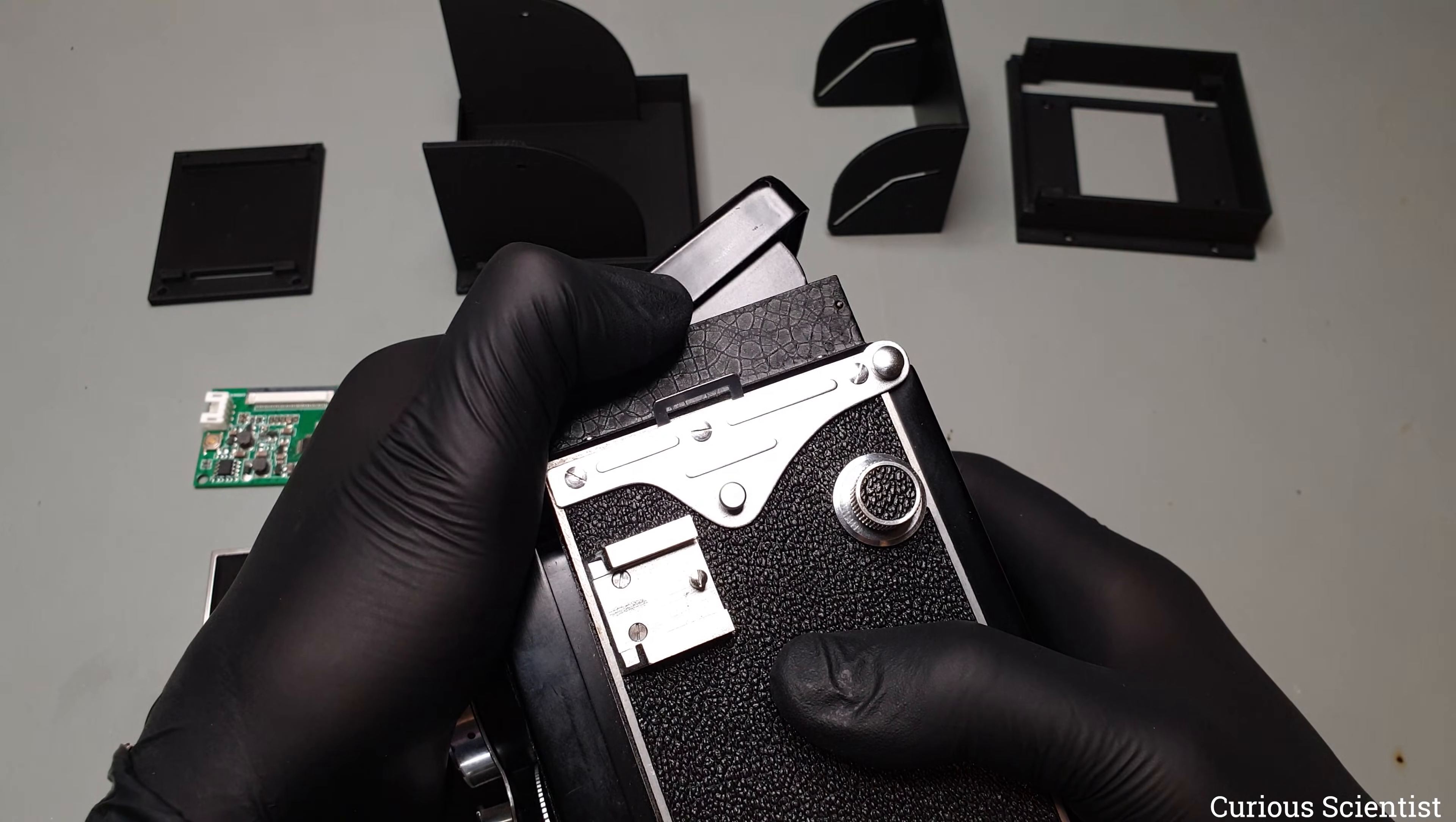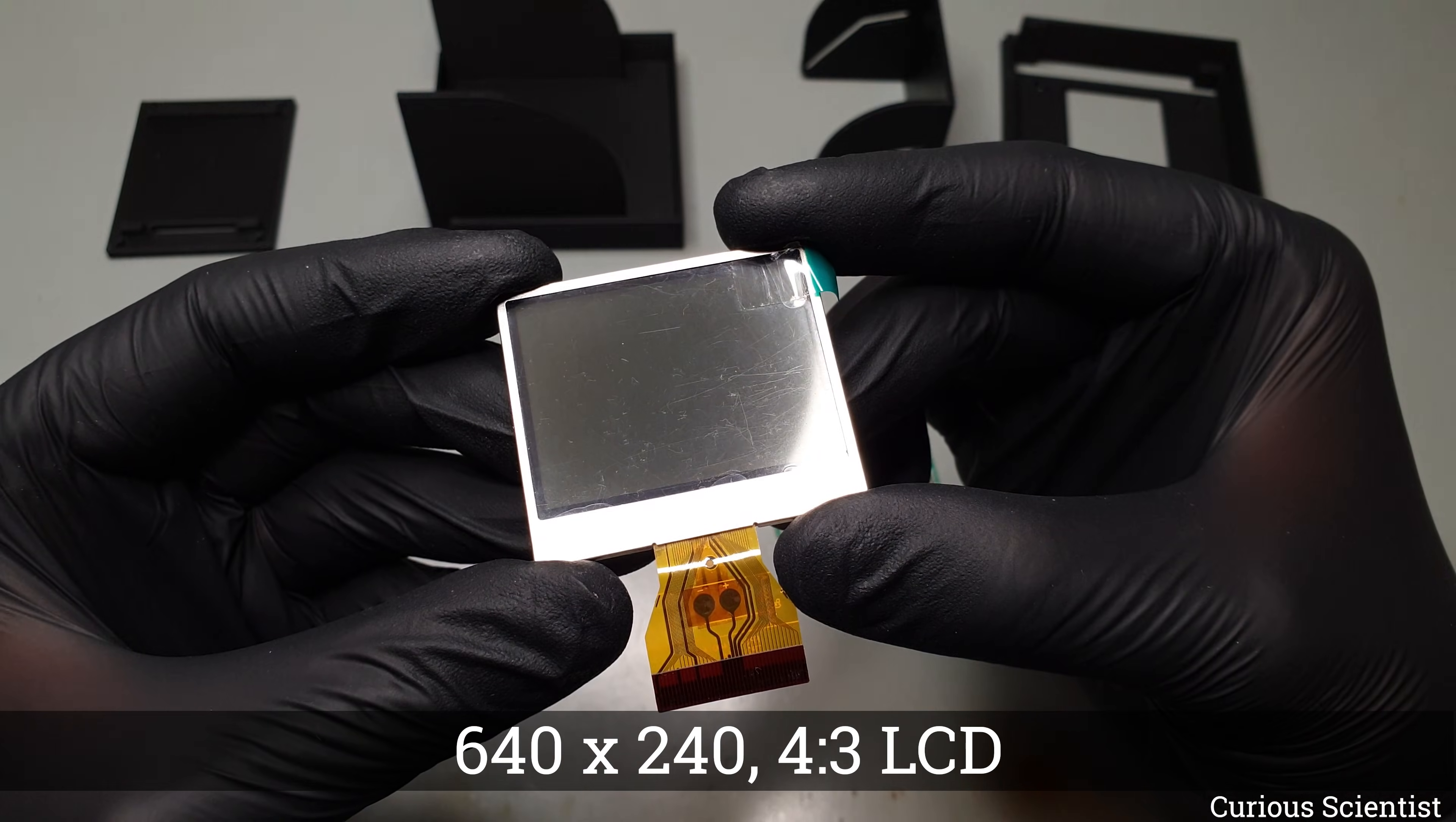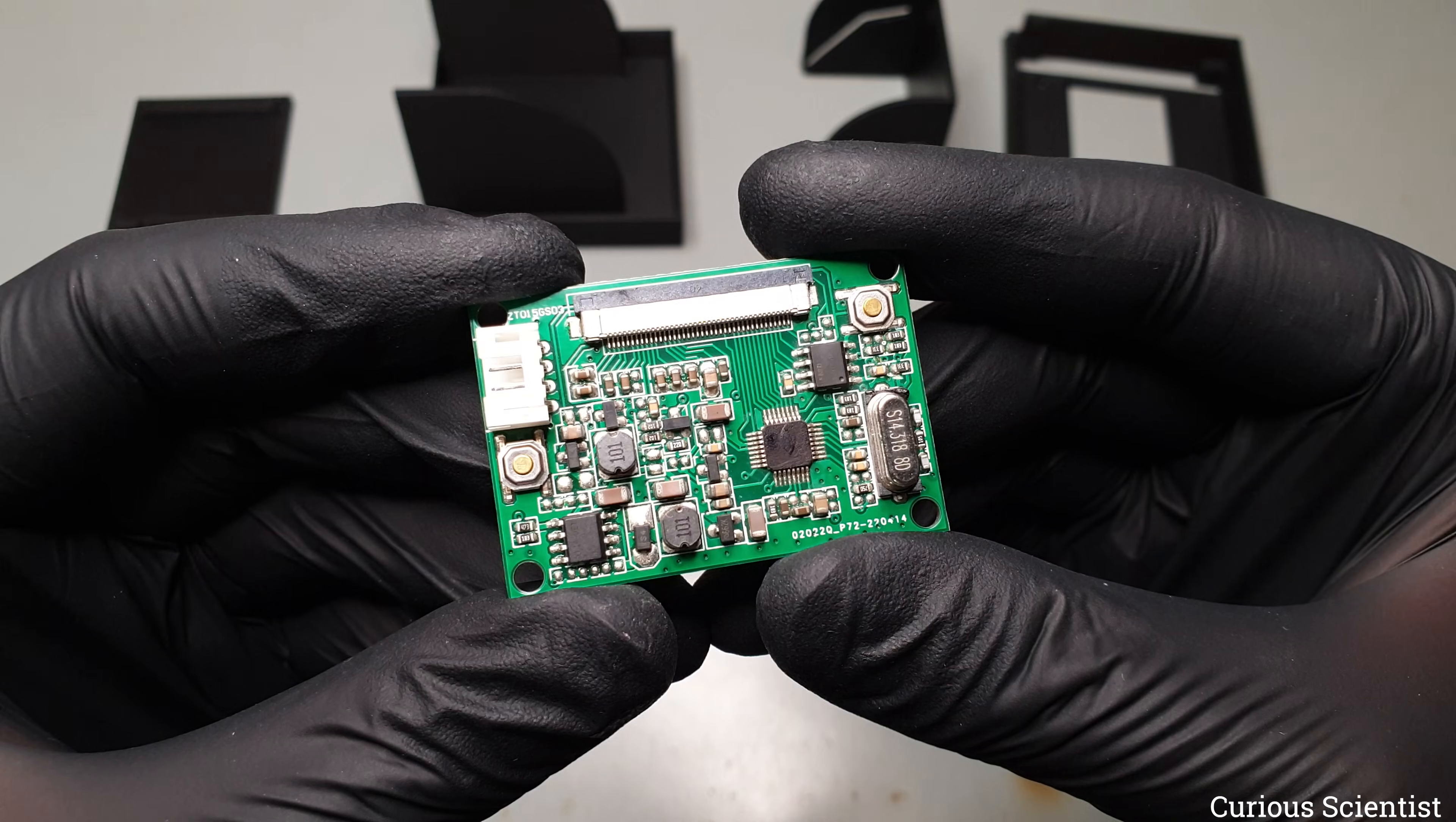It is not quite as smooth as the original, but it is more than good enough. The key component of the viewfinder is this 2 inch LCD. It has 640x240 resolution with a 4 to 3 aspect ratio. The display is driven by this controller module, and the great thing about it is that it accepts an analog video signal directly from the camera.